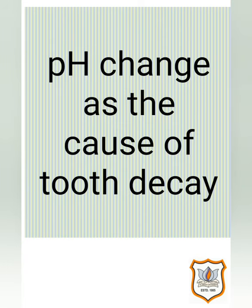pH change as the cause of tooth decay: tooth decay starts when the pH of the mouth is lower than 5.5, that is acidic. Tooth enamel is made up of calcium hydroxyapatite, a crystalline form of calcium phosphate, which is the hardest substance in the body but does not dissolve in water. It actually gets corroded when the pH in the mouth is below 5.5. Bacteria present in the mouth produce acids by degradation of sugar and food particles remaining in the mouth after eating. The best way to prevent this is to clean the mouth after eating using toothpaste, which is generally basic in nature, to neutralize the excess acid and prevent tooth decay.